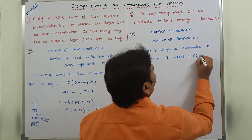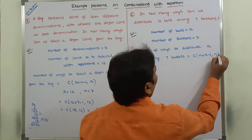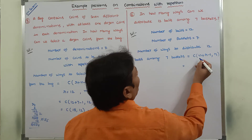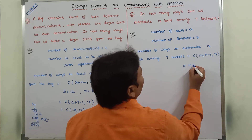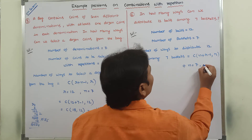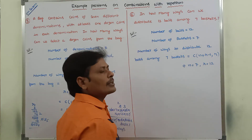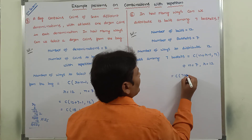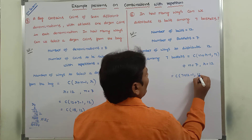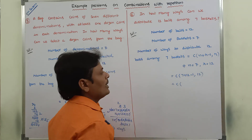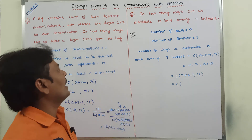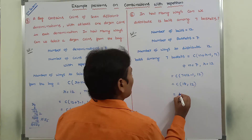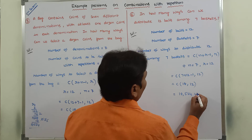The formula is C(n + r − 1, r), where n is the number of baskets equal to 7 and r is the number of balls to be distributed equal to 12. Therefore, C(7 + 12 − 1, 12) = C(18, 12) = 18,564 ways.